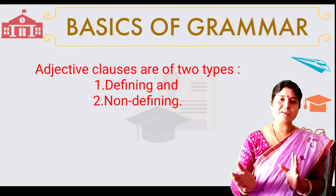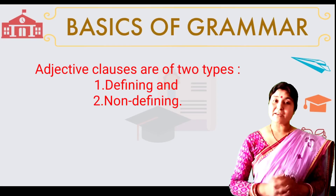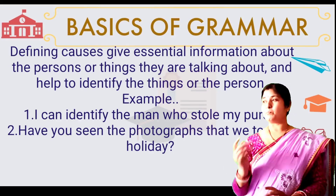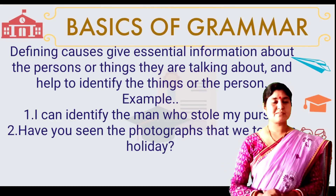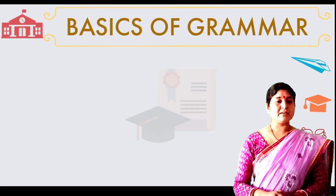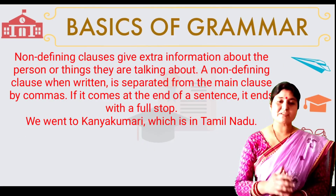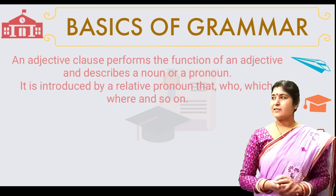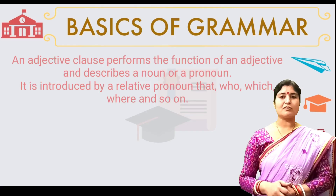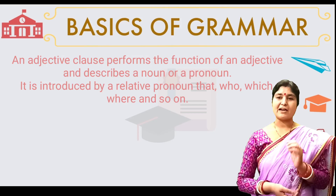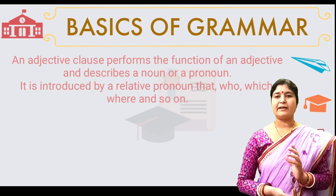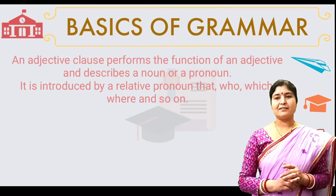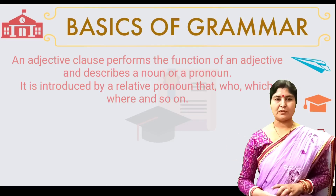What is the difference between the Defining Clause and the Non-defining Clause? The Defining Clause gives essential information about the person or thing. The Non-defining Clause gives us extra information about the person or thing. An Adjective Clause performs the function of an adjective and describes a noun or a pronoun. It is introduced by relative pronouns like: that, who, which, where, and so on.